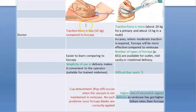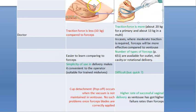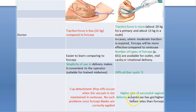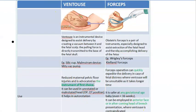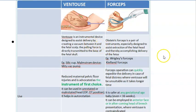To summarize: if it is malrotated or unrotated, use vacuum; if it is face presentation or after-coming head of breech, use forceps - specifically Piper forceps. In those conditions you have no choice. For the baby, forceps is better; for the mother, ventouse is better; for the doctor, ventouse is the instrument of first choice. Don't forget that ventouse is the instrument of choice overall.